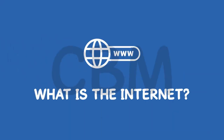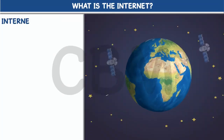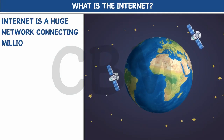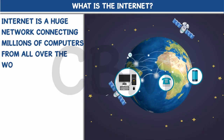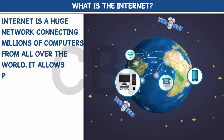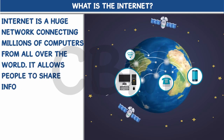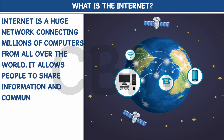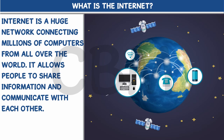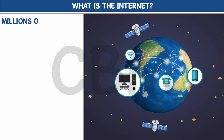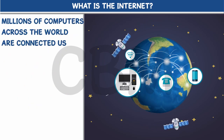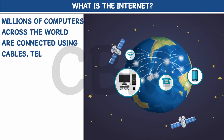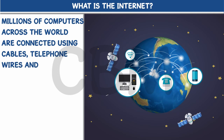What is the internet? The internet is a huge network connecting millions of computers from all over the world. It allows people to share information and communicate with each other. Millions of computers across the world are connected using cables, telephone wires, and satellites.